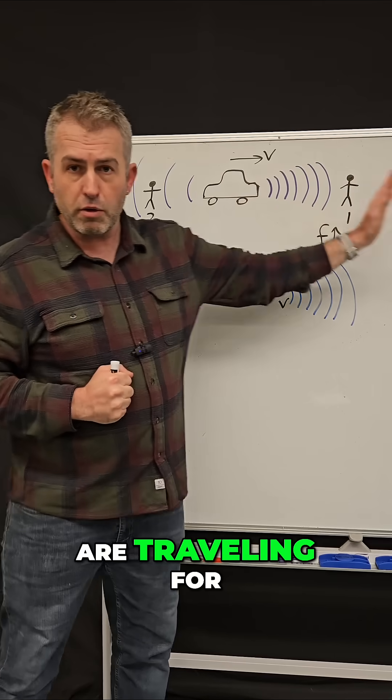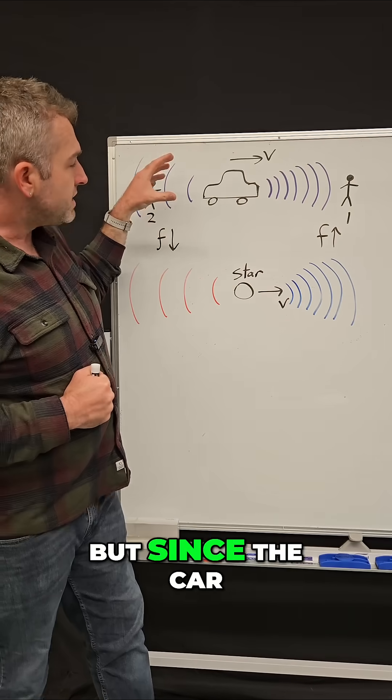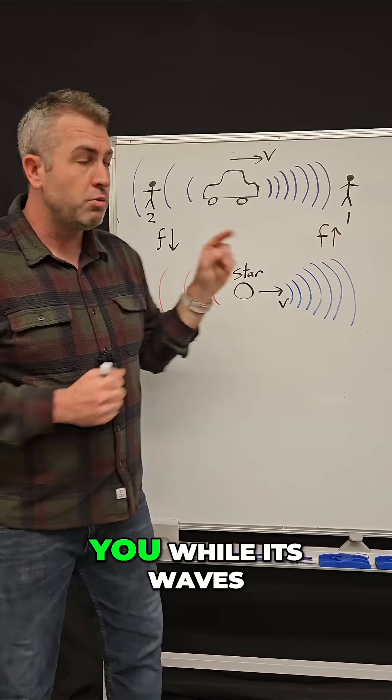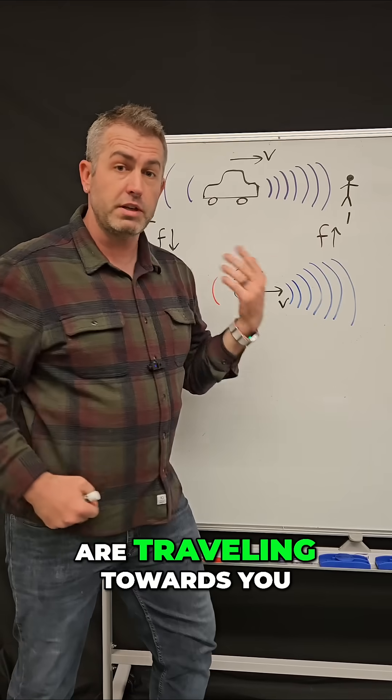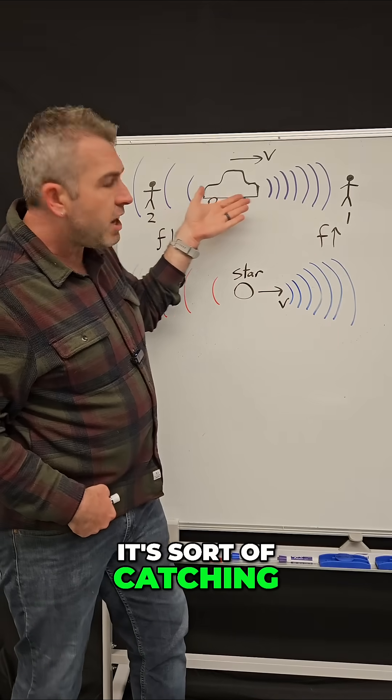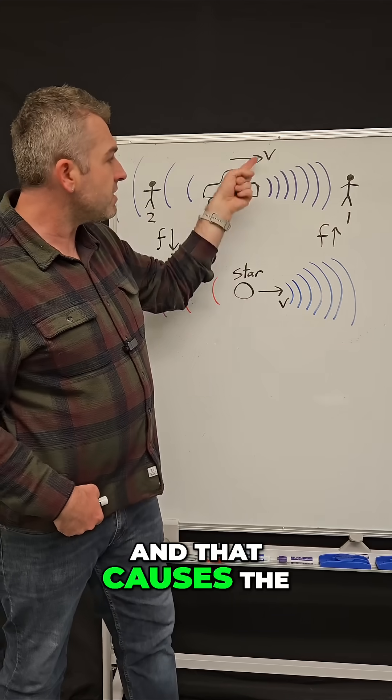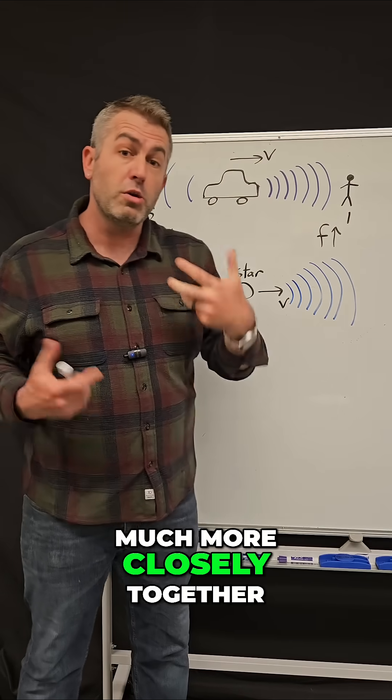Some of those waves are traveling toward you, but since the car is also moving towards you while its waves are traveling towards you, it's sort of catching up with the waves in a sense, and that causes the waves to get bunched much more closely together.